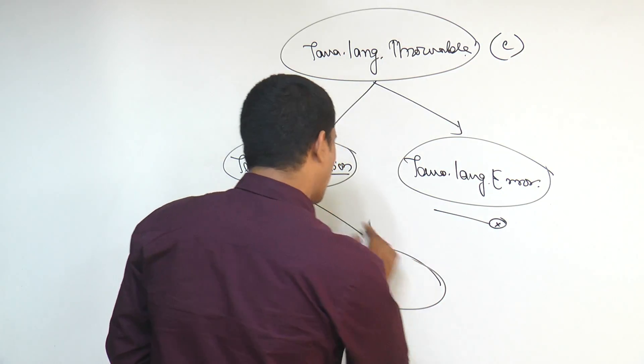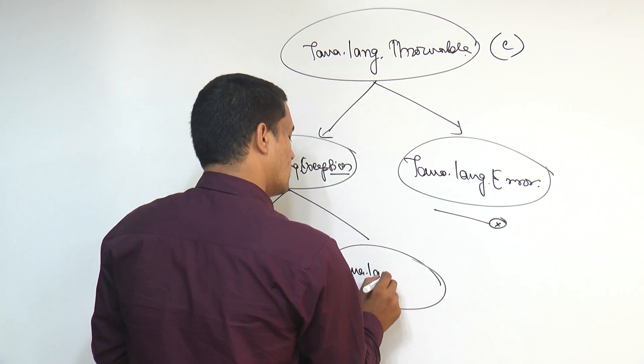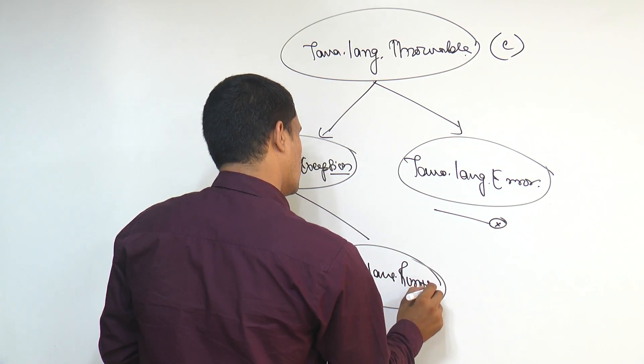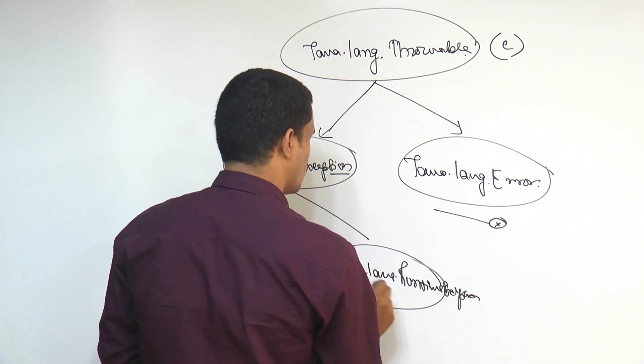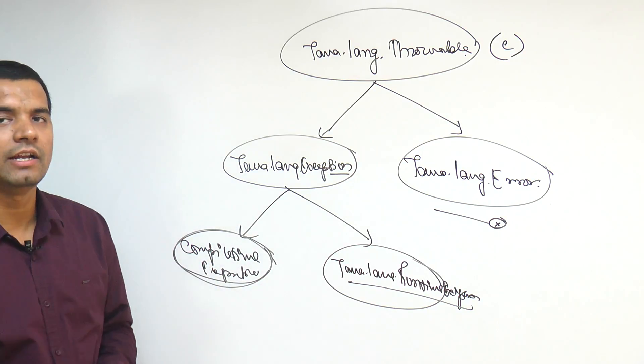And the one again which I am writing as the java.lang.RuntimeException. This is java.lang.RuntimeException and this is the compile time exception.